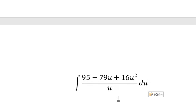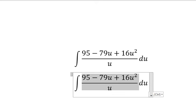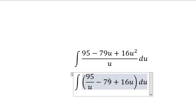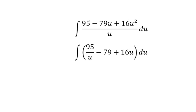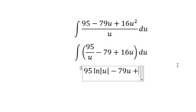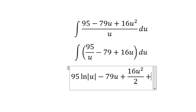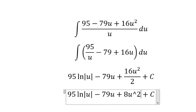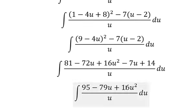So we have 95 divided by u, giving us the integrand: 95 over u, minus 79, plus 16u. The integration gives: 95·ln|u|, minus 79u, plus 16u²/2, plus C. Since 16 divided by 2 equals 8, the final answer is in terms of u, which we substitute back.